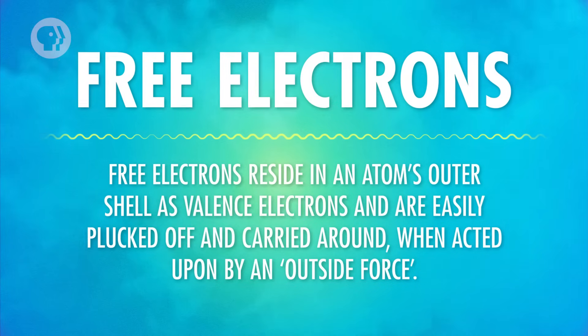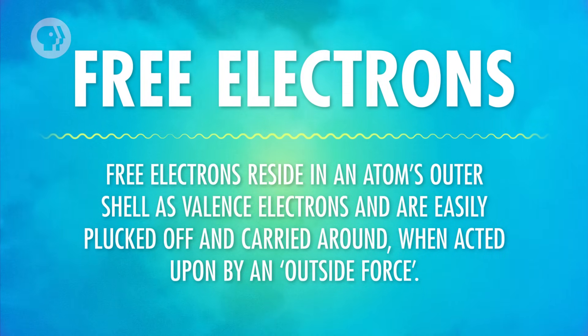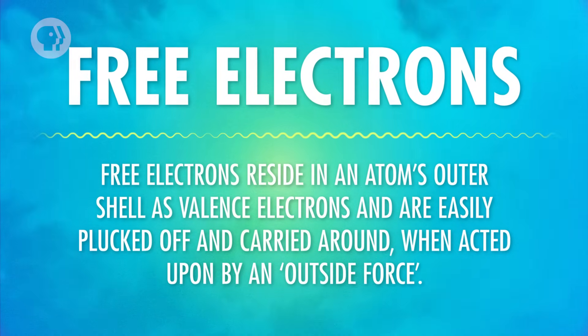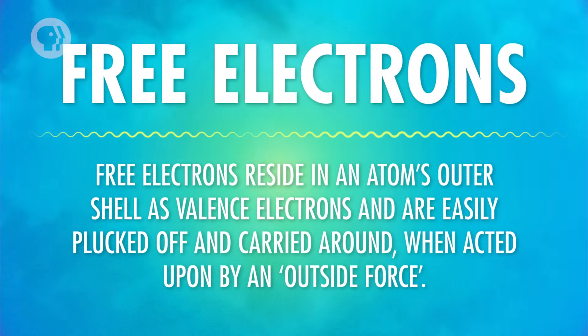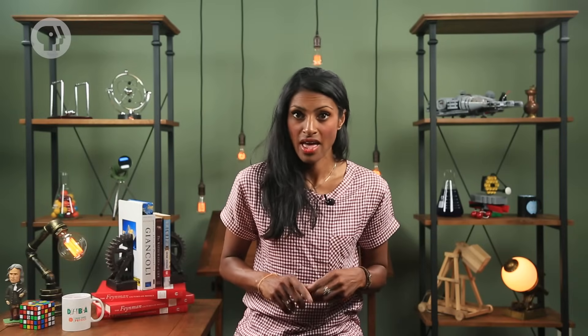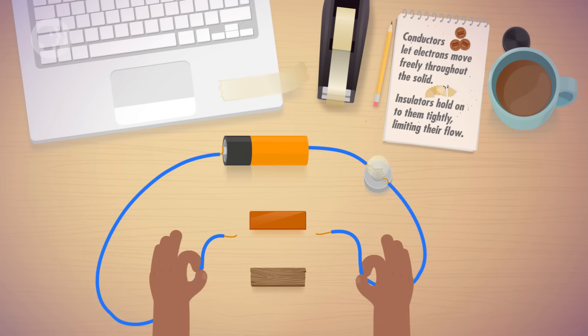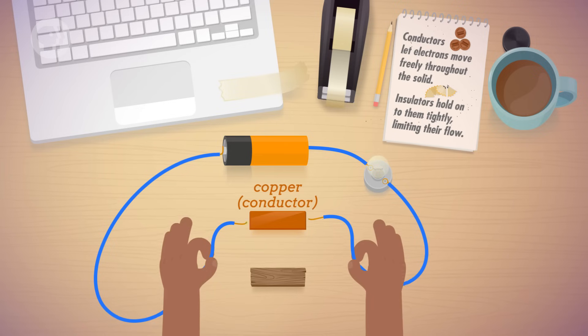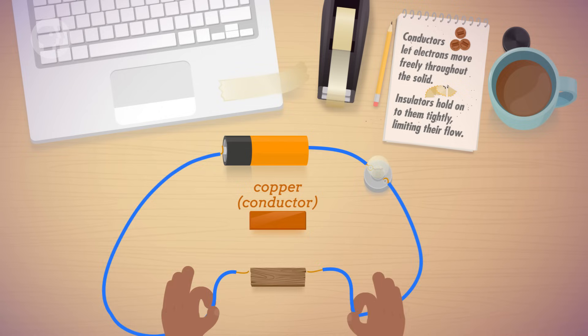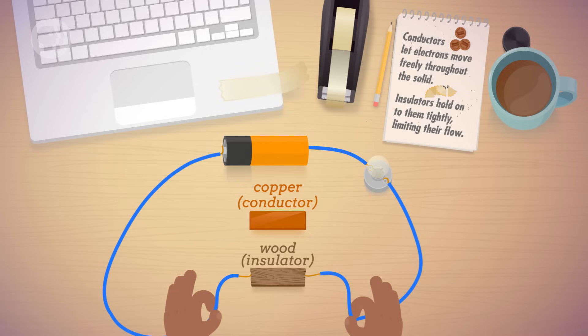Free electrons reside in the atom's outer shell as valence electrons, and are easily plucked off and carried around when acted upon by an outside force. How easy it is for electrons to move around depends on the material, and we describe the materials in the same manner that we do for heat transfer, with conductors and insulators. Materials that are conductors, like copper, let free electrons move freely throughout the solid, while insulators, like wood, hold onto them tightly, limiting their flow.